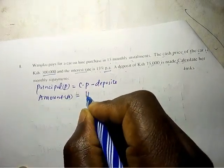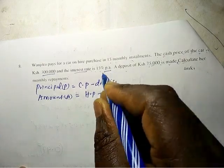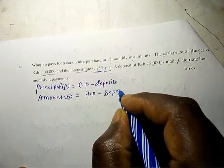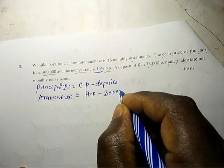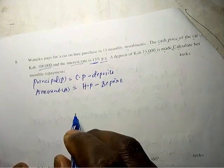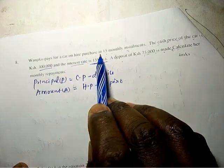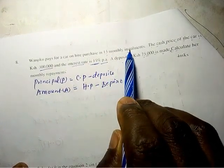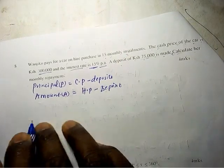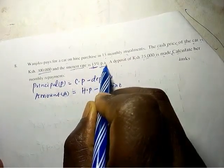Very important things you need to know when hire purchase is included with the rate and deposit. So she pays 15 monthly installments. Another trick here is that the interest is 15% per annum.